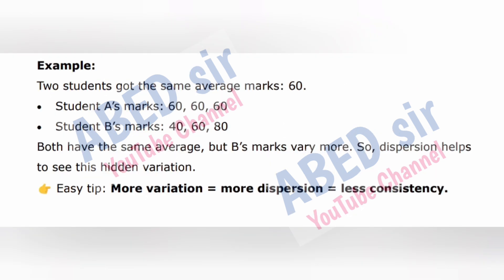Example: Two students got the same average marks, 60. Student A's marks: 60, 60, 60. Student B's marks: 40, 60, 80. Both have the same average, but B's marks vary more. So dispersion helps to see this hidden variation. Easy tip: more variation equals more dispersion equals less consistency.